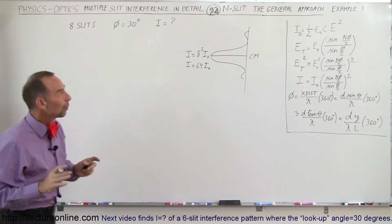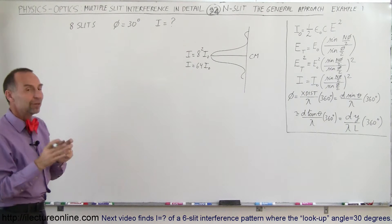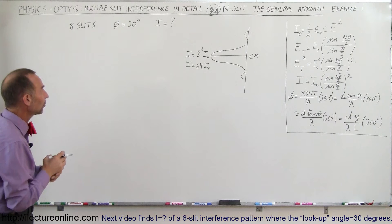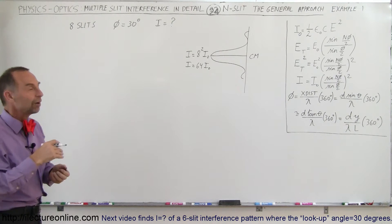So what would be the intensity when the phase angle is 30 degrees? All right, 30 degrees of course that would be 1/12th of a wavelength.